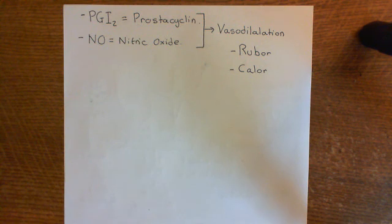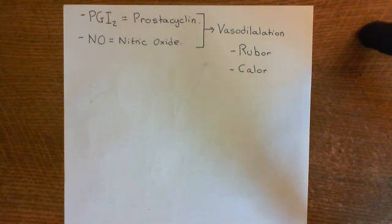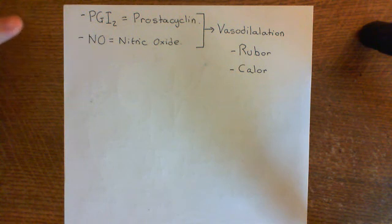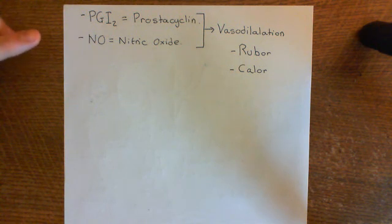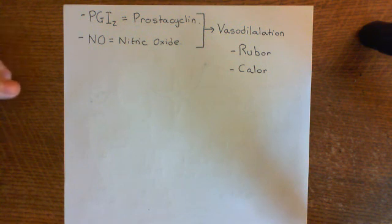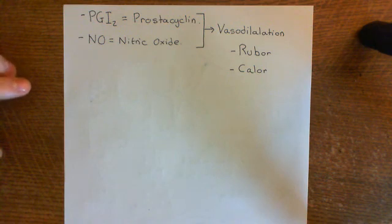One of the things which happens is that you get vasodilation of the terminal arterioles. The endothelial cells start producing prostacyclin and nitric oxide, which relax the smooth muscle cells around the terminal arterioles, resulting in vasodilation and an increased blood flow to the affected area.